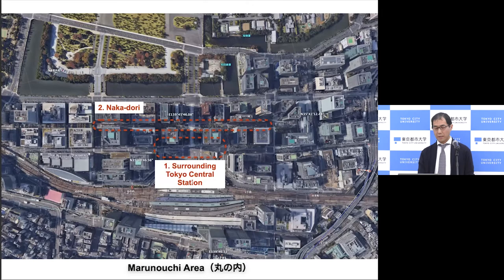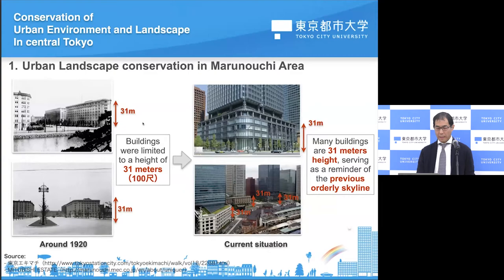I'm going to explain about two zones. The first is the area surrounding Tokyo Central Station, and the second is Nakadori — which means 'mid-street' in English. Of course, there are a lot of buildings here because this is a CBD, a central business district area.